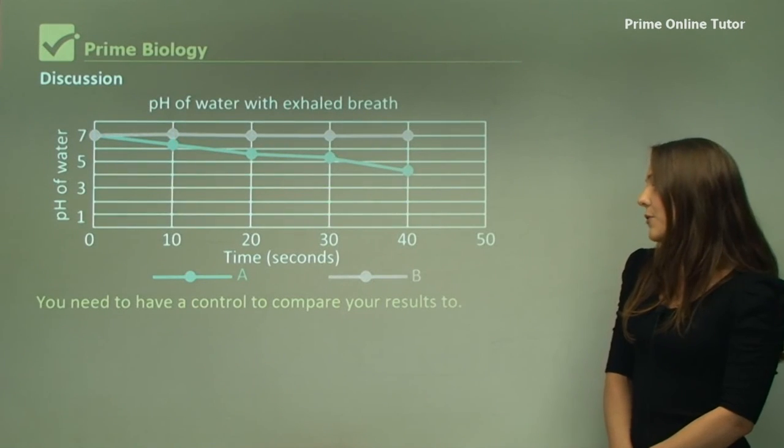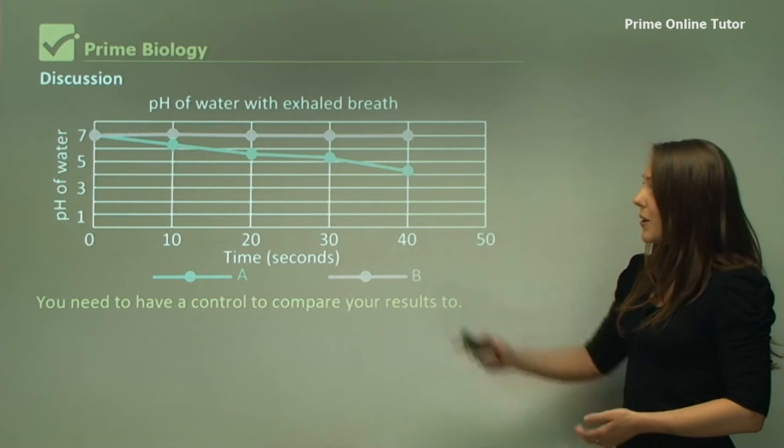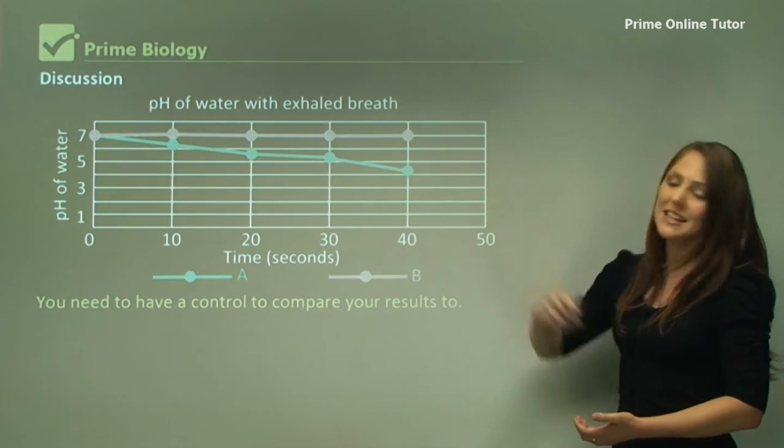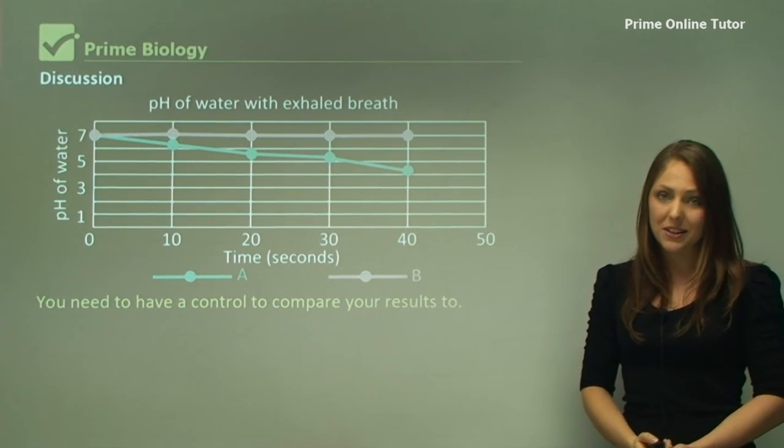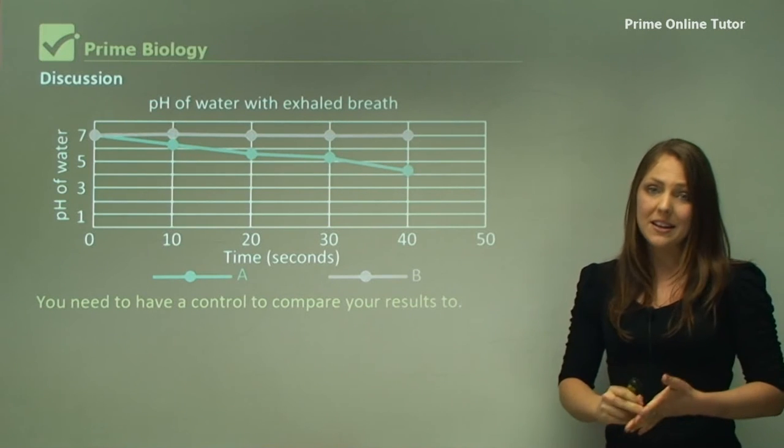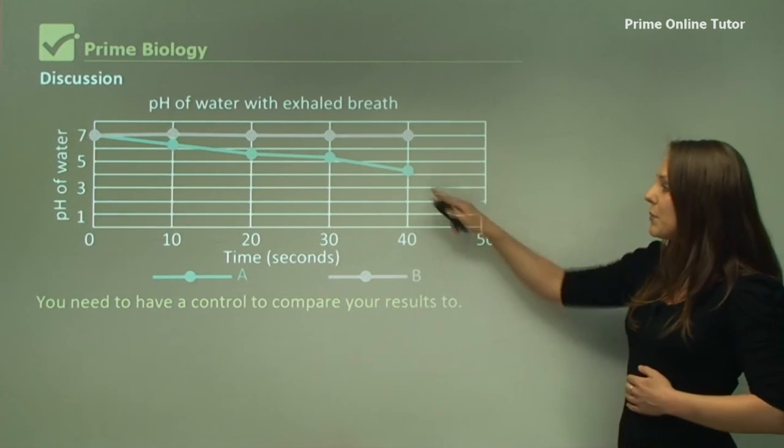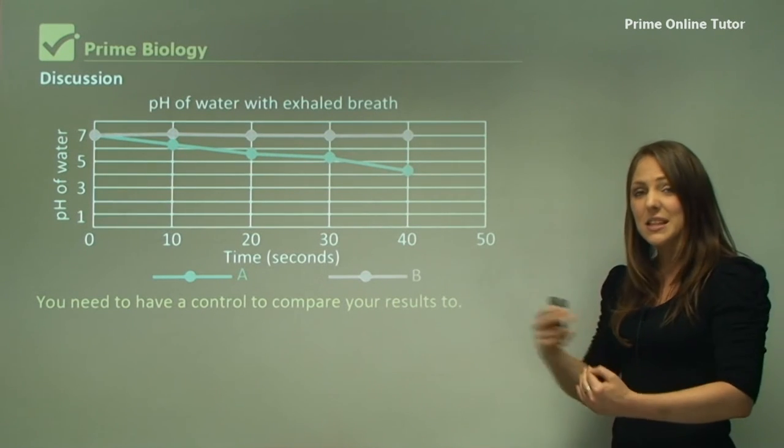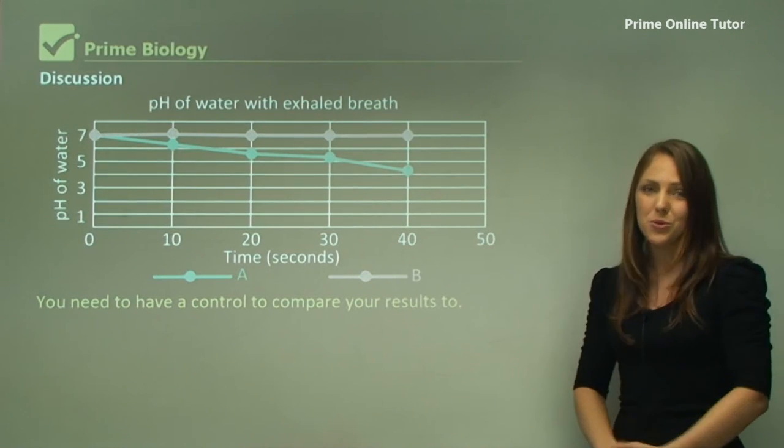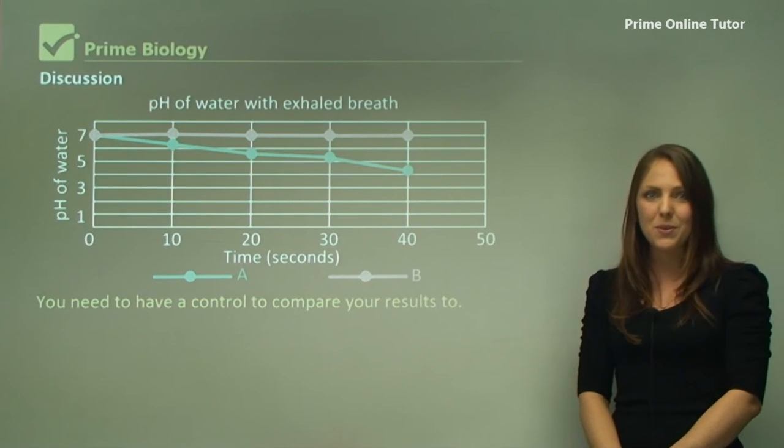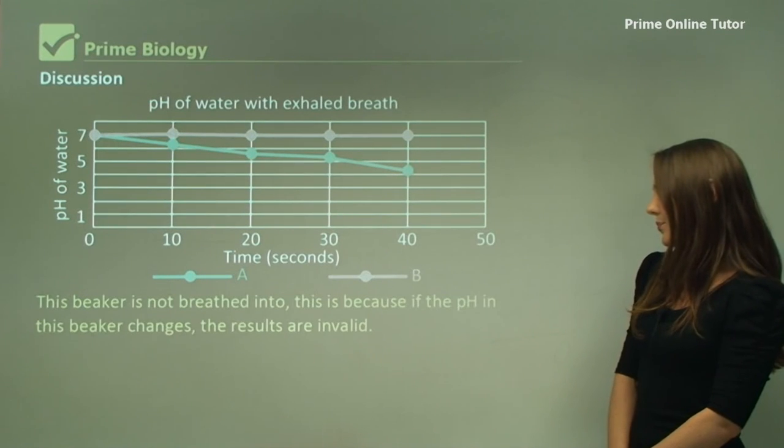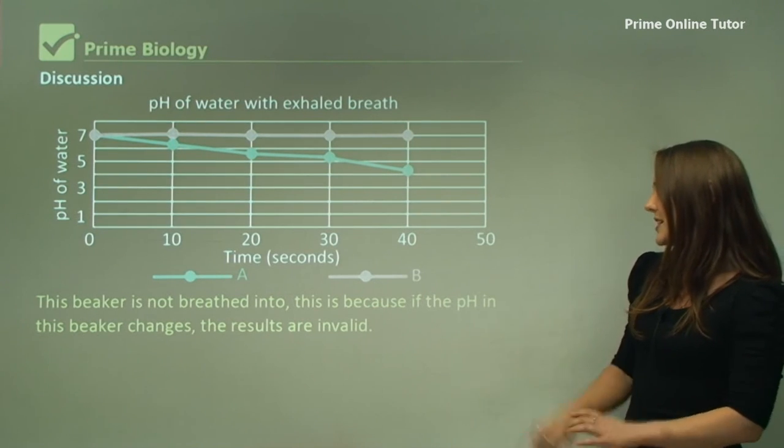You need to have a control to compare your results to, and beaker B is actually the control in this experiment. We blow into only one beaker, not both, because we need something to compare it to. If we only blew into beaker A, we wouldn't actually have something to compare it to, so it is important to have a control in every experiment you do.